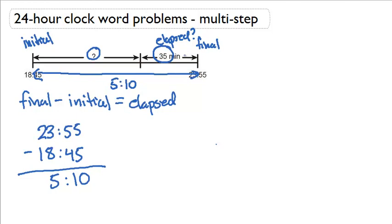If the other part was 35 minutes, then this part must be 5 hours and 10 minutes minus 35 minutes.